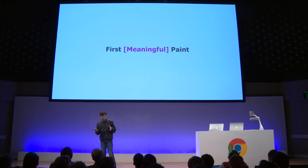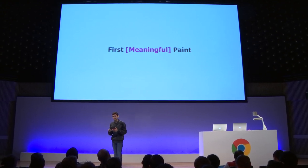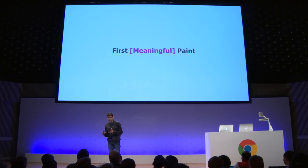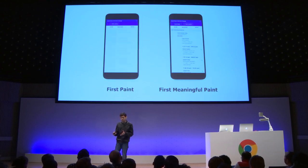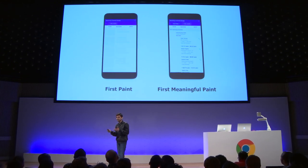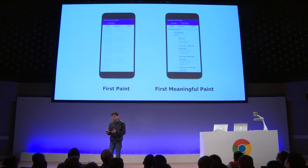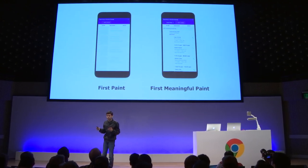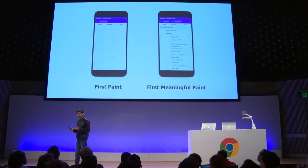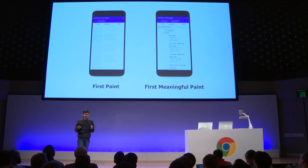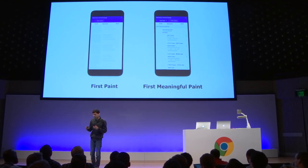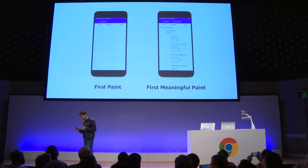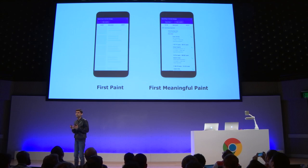After we were done with asset delivery, we went ahead to improve our render time — specifically the first meaningful paint. First paint is when any pixel is available on your phone, but most of the time that's not relevant and the user feels like waiting. When the relevant content is there, that's the first meaningful paint. We wanted to zero down the difference between these two.